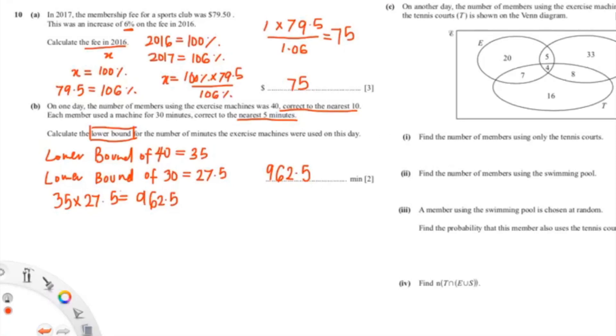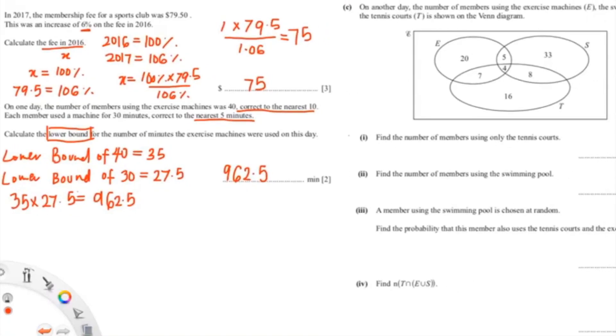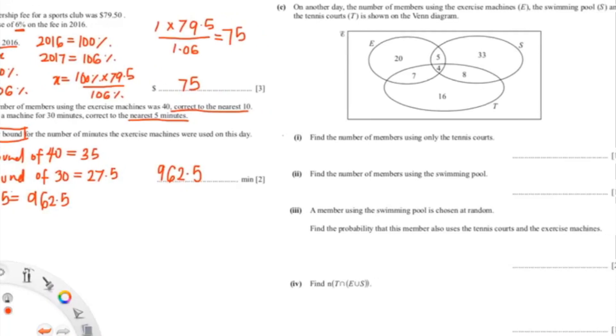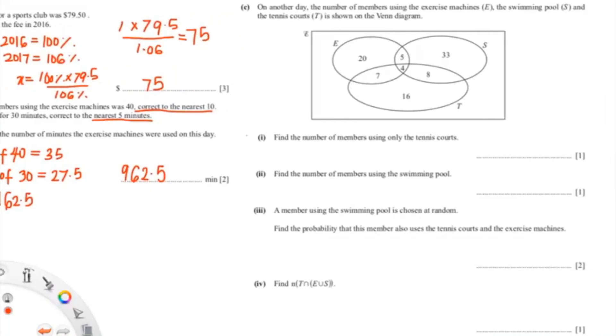Now let's move on to the next question. As you can see, there's a Venn diagram given. Let me just read the question. Find the number of members using only the tennis court. The keyword here is only, so our answer would be 16.